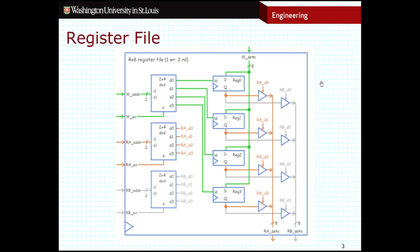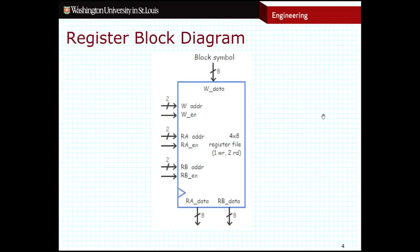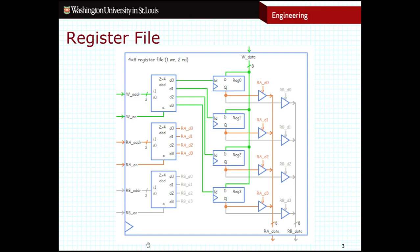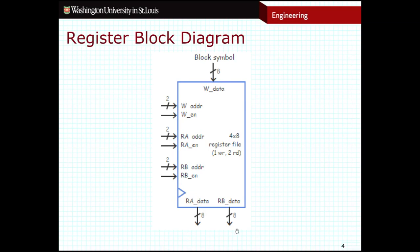Before moving on, here's what the block diagram looks like. If you use these in your circuits, you don't need to sketch all of this out unless specifically asked to — it's perfectly acceptable to use a block diagram. You can see I've got the data going in, the write address, the write enable, the read address, the read enable twice — once for each read port — and then two read values coming out, one for each read port.